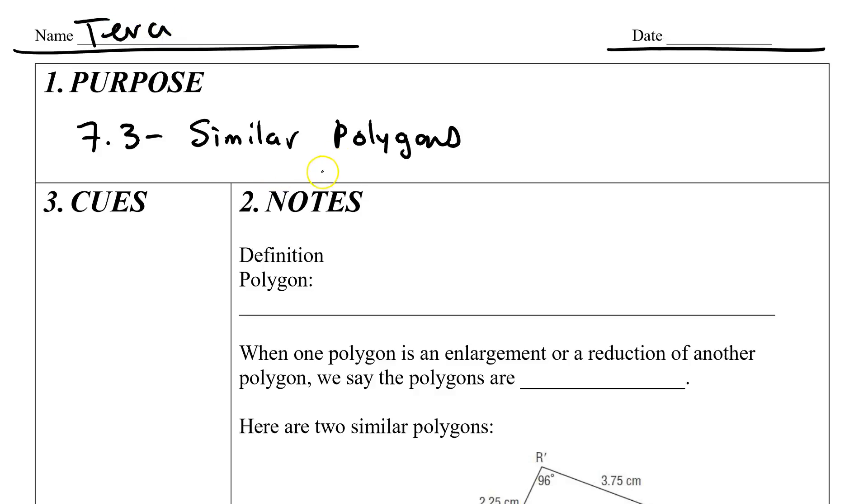Similar polygons, well what the heck is a polygon? A polygon is a many sided object where all sides are created with straight lines.